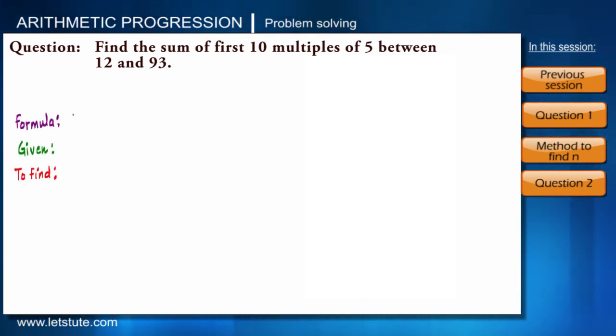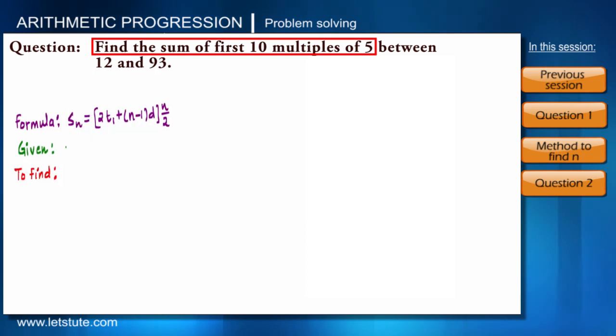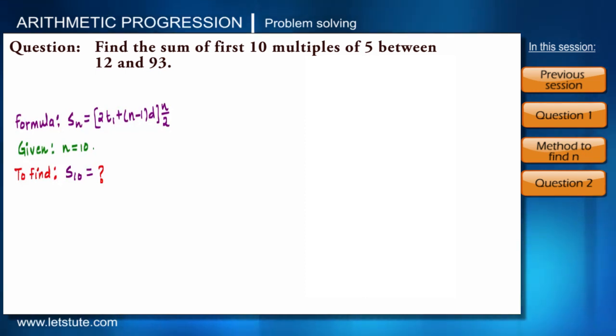So first of all, the question says to find sum of the numbers, that means we will use second formula SN. Read the question carefully and write down what is given. It says find first 10 multiples of 5. How many multiples? 10. That means n is given to us. There will be 10 multiples of 5 and we will have to add them, right?